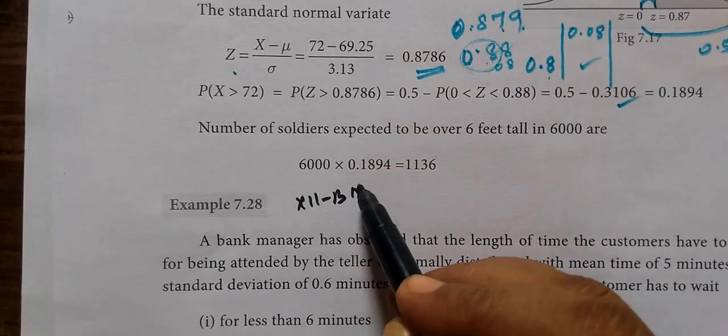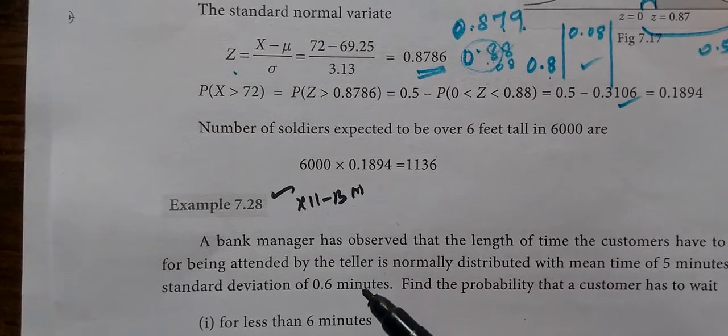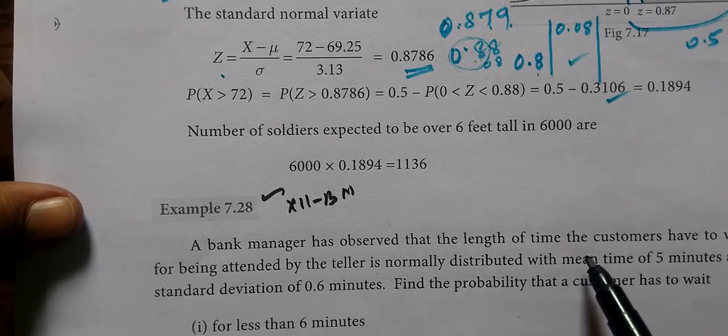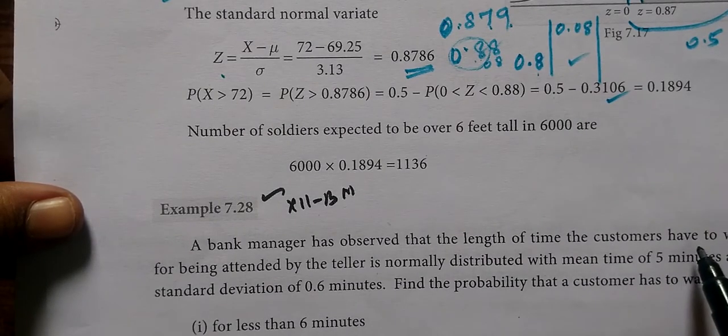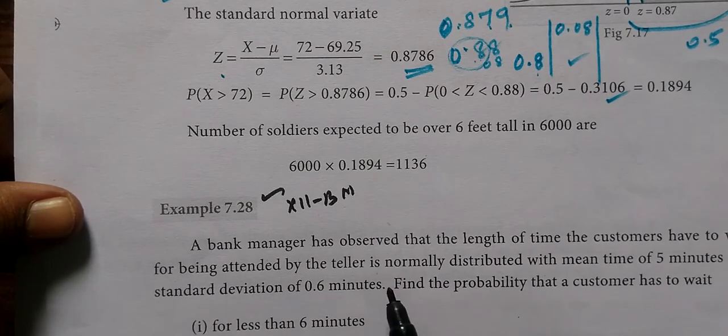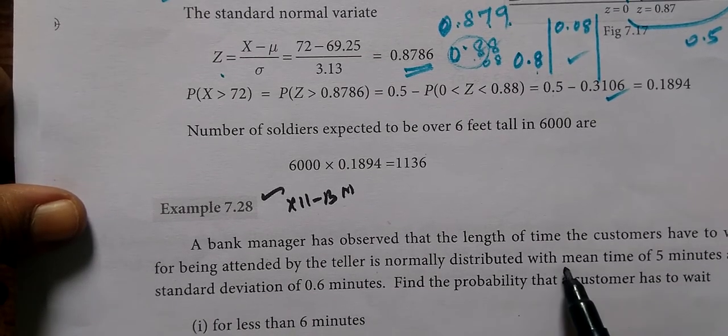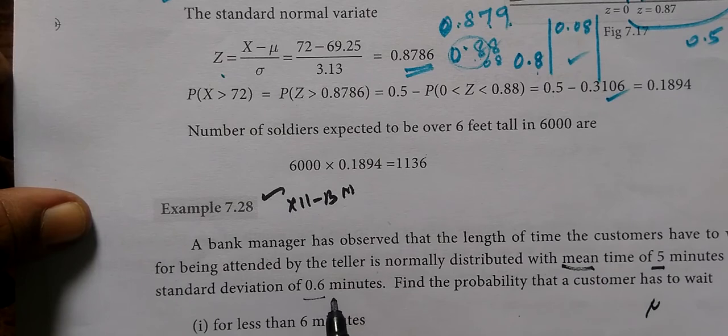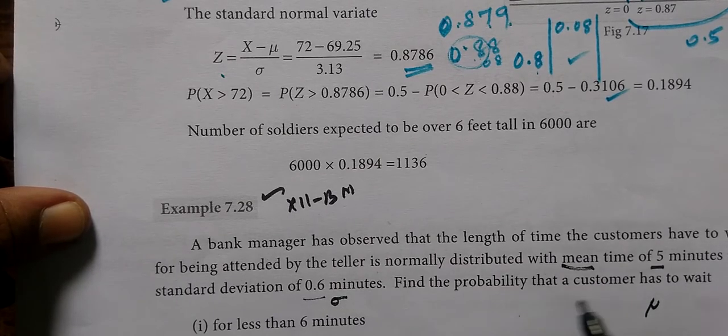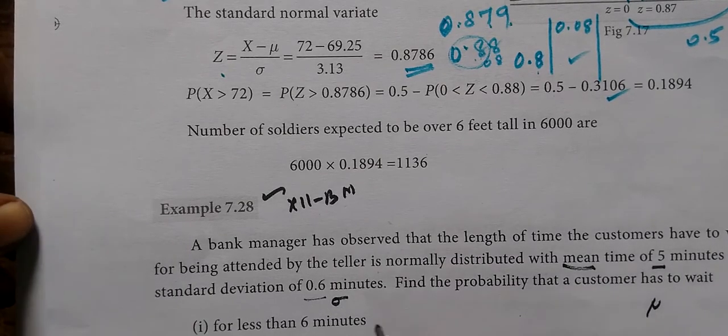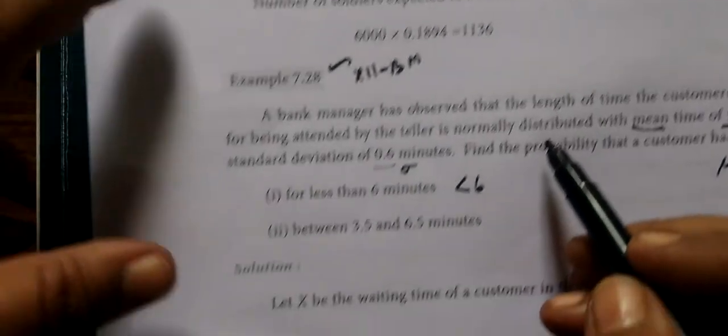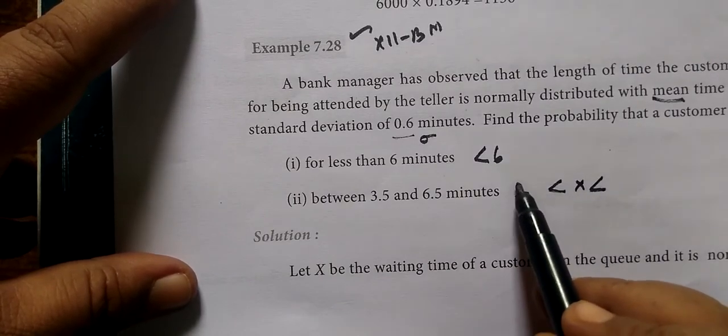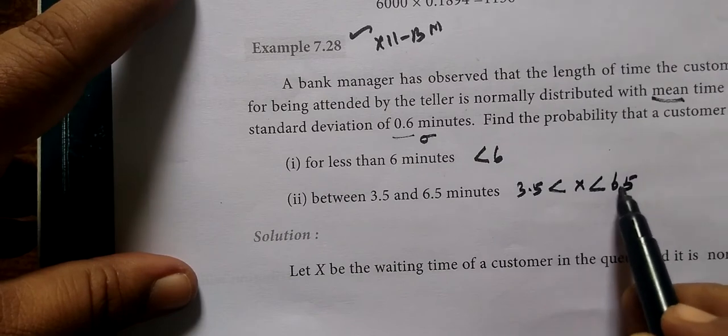Now we'll talk about business math. Example 7.28: A bank manager has observed that the length of time customers have to wait for being attended by the teller is normally distributed with mean time μ = 5 minutes and standard deviation σ = 0.7 minutes. Find the probability that a customer has to wait for less than 6 minutes, and between 3.5 and 6.5 minutes.